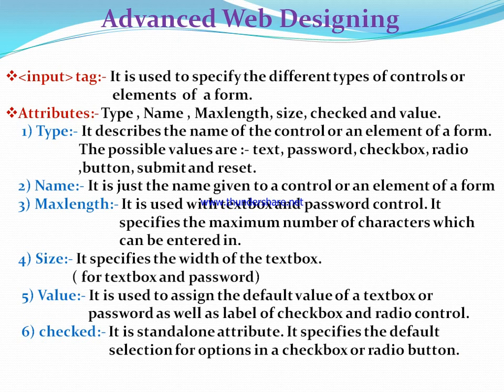The first attribute is type — it describes the name of the control or element of a form. The possible values are the seven basic elements or controls of a form: text box, password, checkbox, radio, button, submit, and reset. These are the possible values of the type attribute of the input tag. If you want to introduce a text box within a form, use type=text. For a password element, use type=password, and so on. The next attribute is name — it is used to identify an element by assigning a specific unique name to the control. It is user defined.